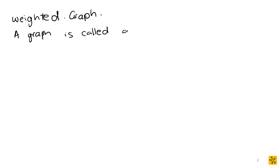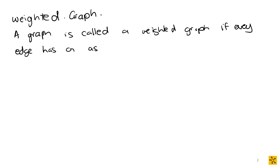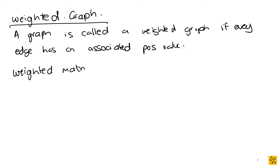Formally: a graph is called a weighted graph if every edge has an associated positive value. If you have a weighted graph, the adjacency matrix alone won't fully help you — as I preempted earlier, your elements won't necessarily just be ones. So you'll have your weighted matrix, and instead of saying A is connected to B with a one, you'll say the actual weight between A and B.